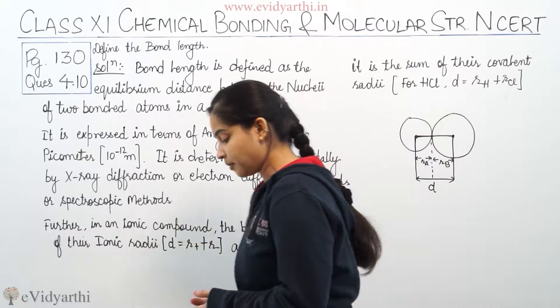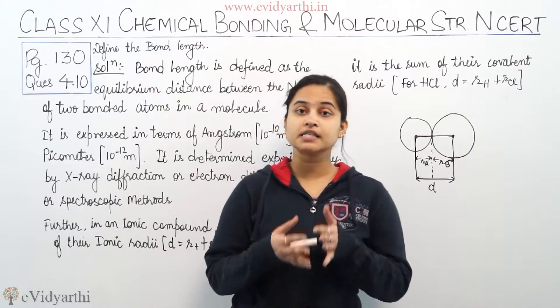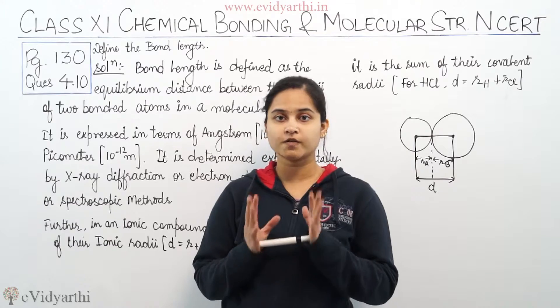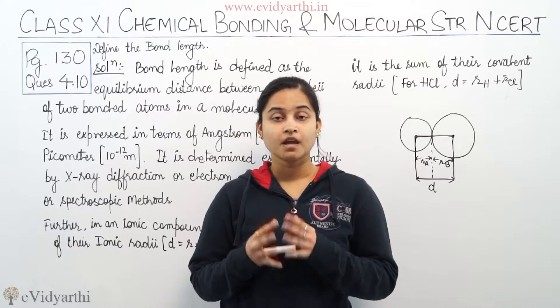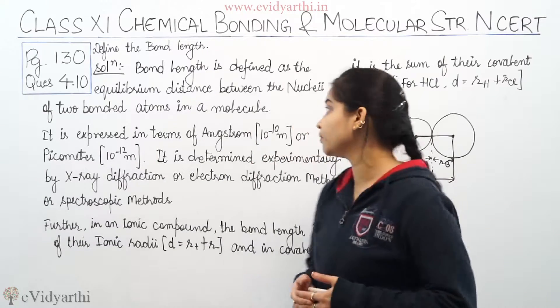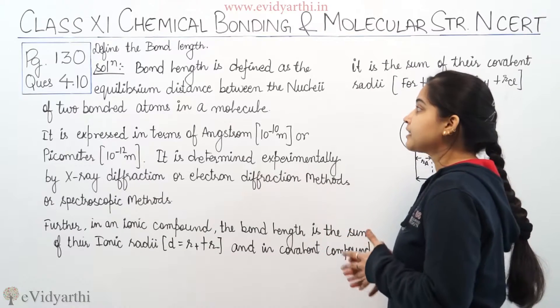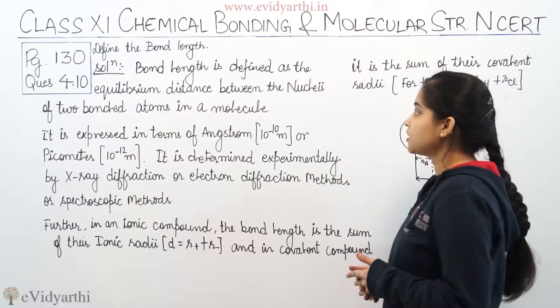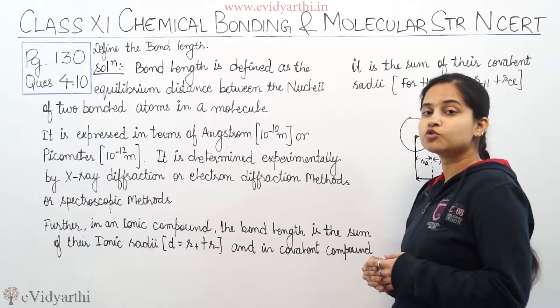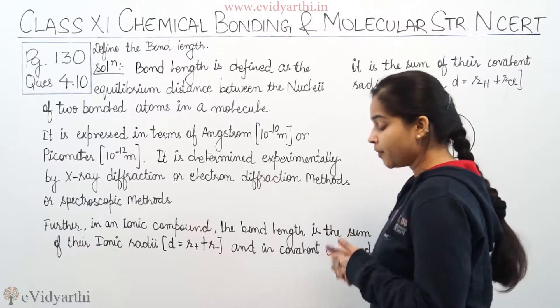So we need to define the bond length. See what is bond length? Bond length is the equilibrium distance between the nuclei of the two bonded atoms of a molecule. So please have a look on the board now. Bond length is defined as the equilibrium distance between the nuclei of the two bonded atoms in a molecule.